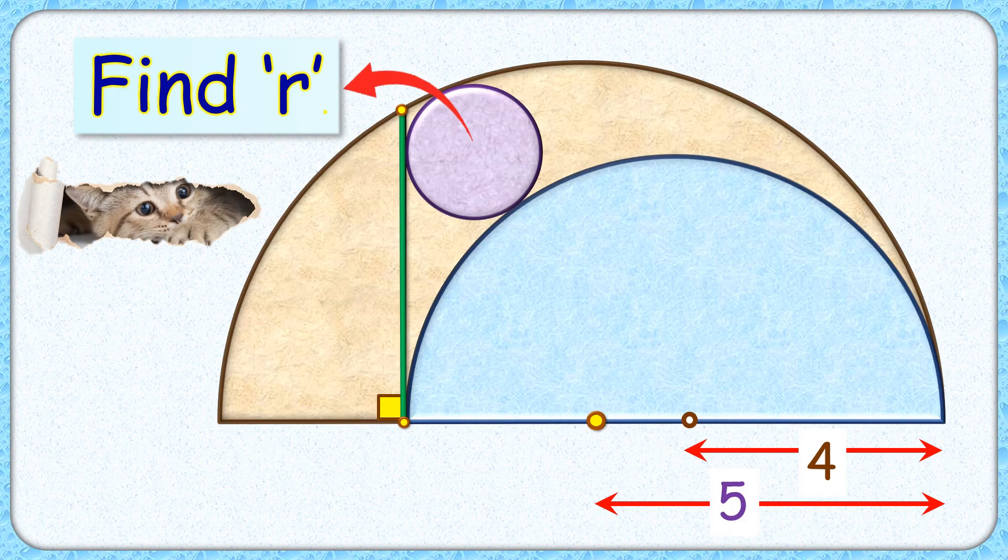Welcome everyone to this interesting question where the radius of this brown semicircle is 5 cm. Radius of this blue semicircle is 4 cm. The exciting part is with this limited data we have to find the radius of this purple circle.